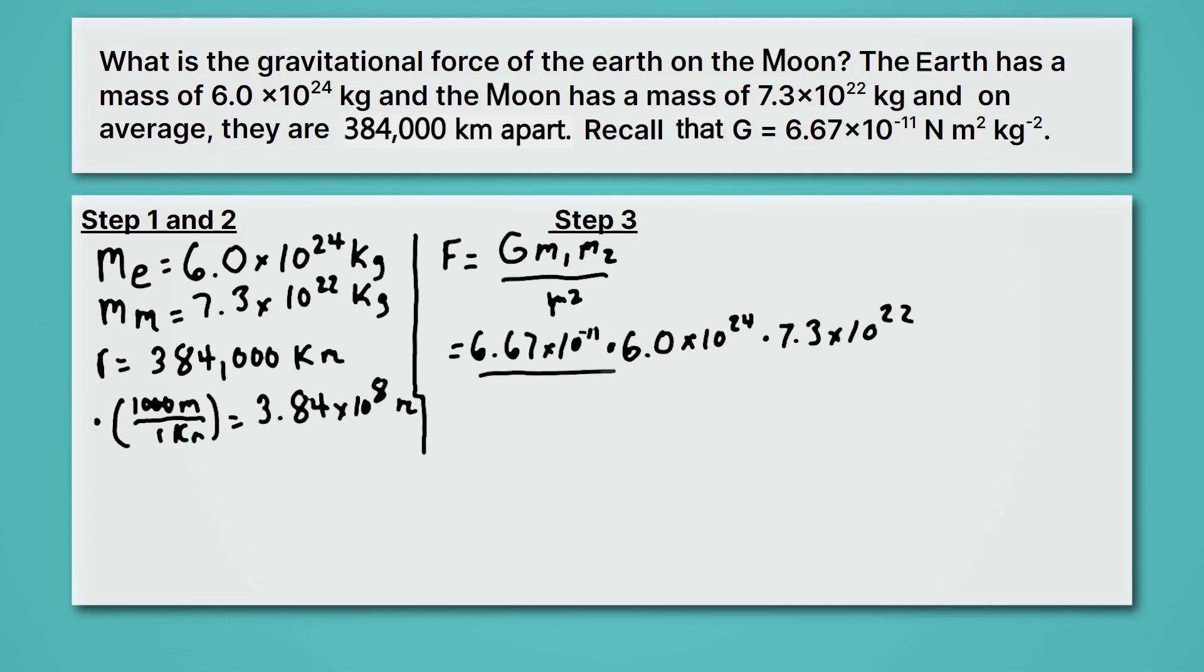That's all divided by my distance squared, which is 3.84 times 10 to the 8th squared. This is definitely something you want to practice putting in your calculator. A quick tip is type in all the scientific notation numbers together up top first. So put in all the numbers up top first. Then click equals or enter whatever it is on your calculator.